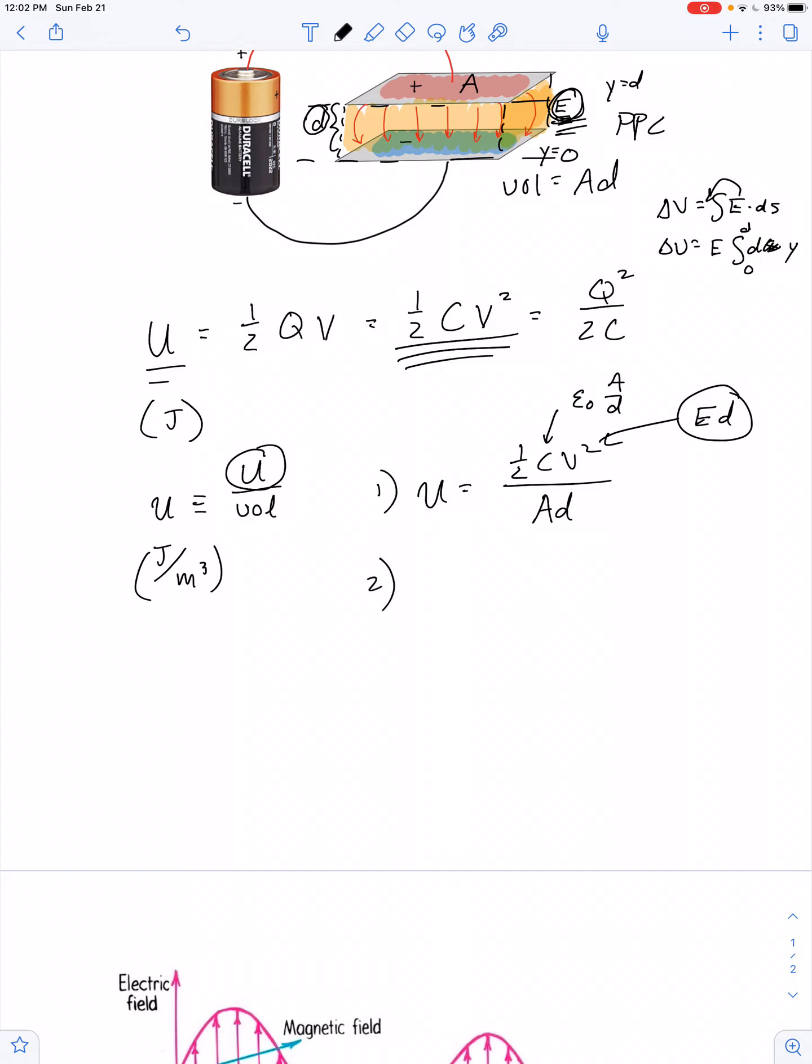So if we make the substitutions, we have our energy density is equal to one-half epsilon naught a over d times e squared times d squared all over ad. So we can cancel out the a. I can combine this d with this one to make it d squared, and then that cancels out.